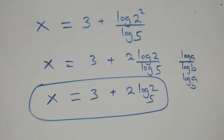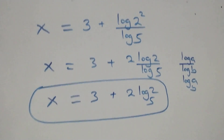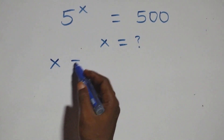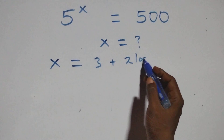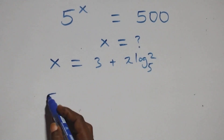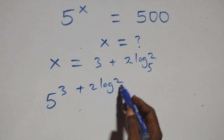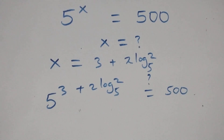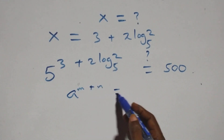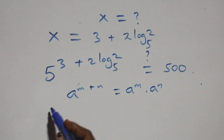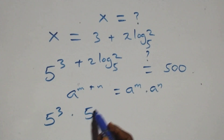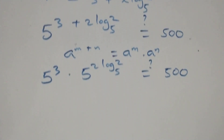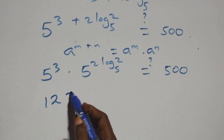Let's check here if this satisfies the given problem. We substitute the value of x, which is x equals to 3 plus 2 log 2 over log 5. What we have becomes 5 raised to power 3 plus 2 log 2 over log 5, equals 500. Applying the exponent addition rule, a raised to power m plus n equals a raised to m times a raised to n, this becomes 5 raised to power 3 times 5 raised to power 2 log 2 base 5, equals 500. And 5 raised to power 3 equals 125.